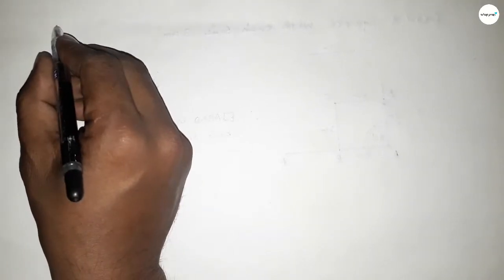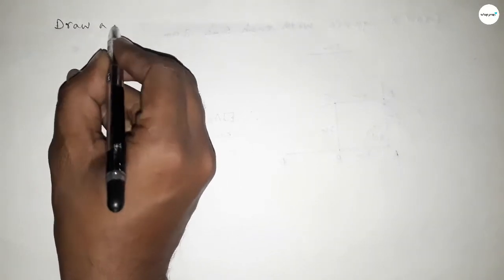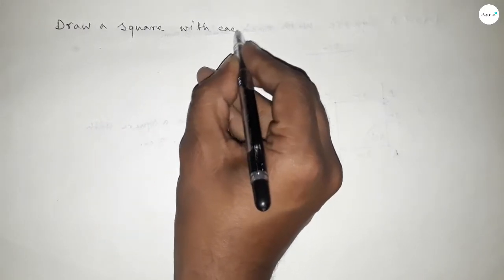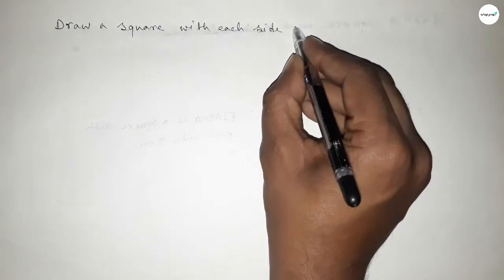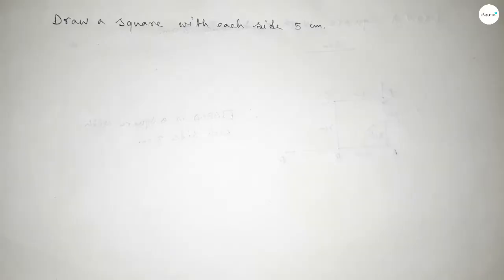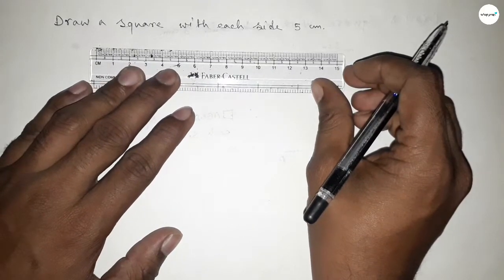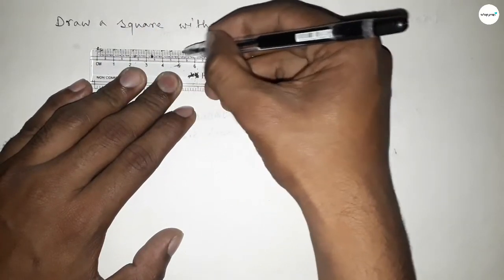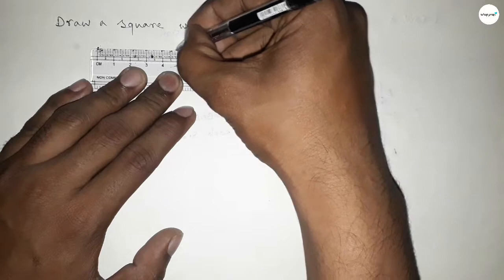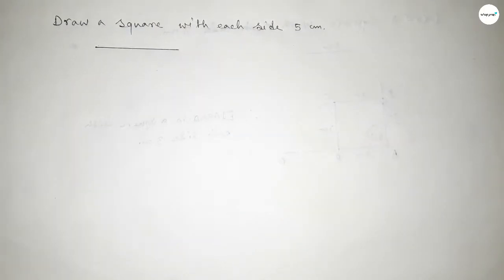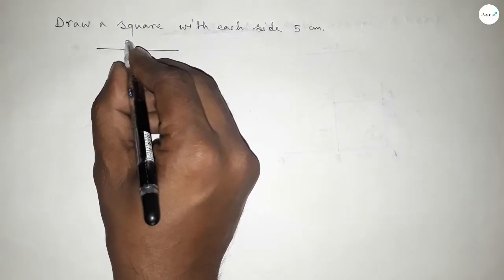Hi everyone, welcome to SSR Classes. Today in this video we have to draw a square with each side 5 centimeters. So let's start the video. First of all, drawing here a length of 5 centimeters: 0, 1, 2, 3, 4, and this is 5.